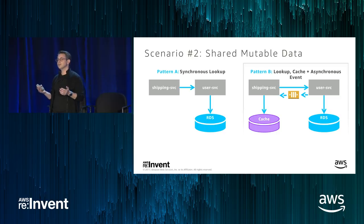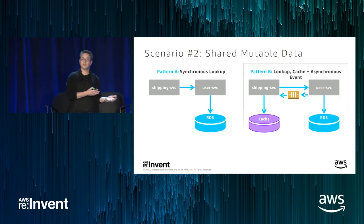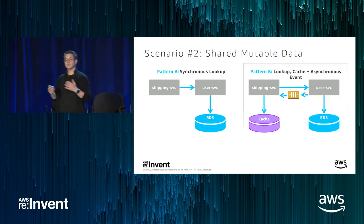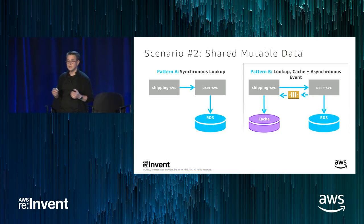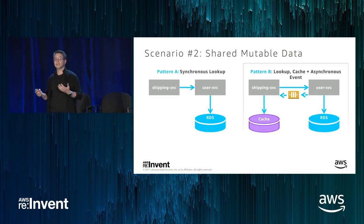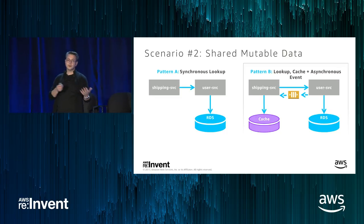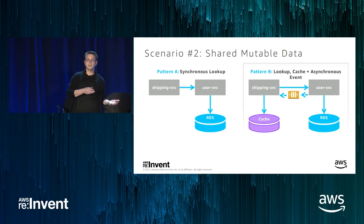The advantage of the cache approach is we've addressed the performance problem — the shipping service retrieves data directly from the cache. The trade-off is that because the shipping service is retrieving data from the cache, it's now eventually consistent. So we have two approaches: one is consistent, and the other is eventually consistent. How do we achieve consistency across our system? That brings us to transactions.